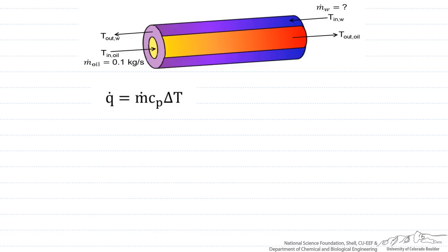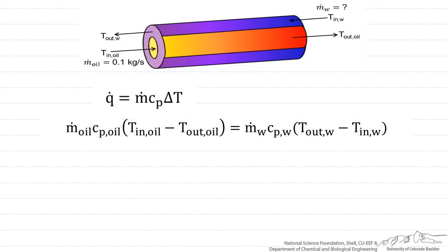Because the system is adiabatic, what we can say is that the mass flow rate of the oil times its heat capacity times the difference in temperature coming out versus coming in has to equal the mass flow rate of the water times its heat capacity times the difference in temperature of the water.